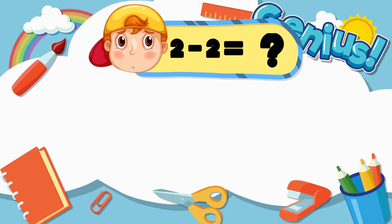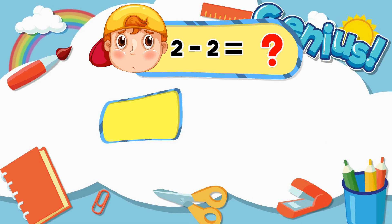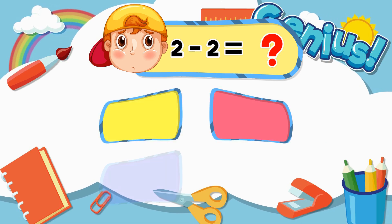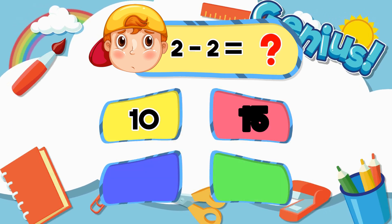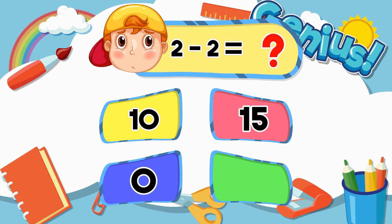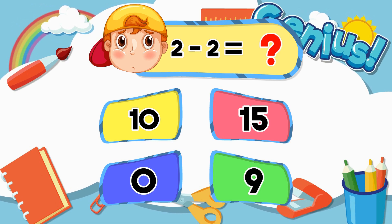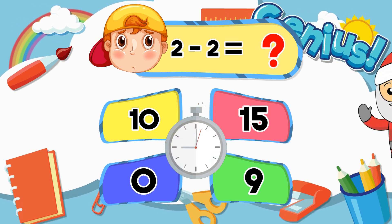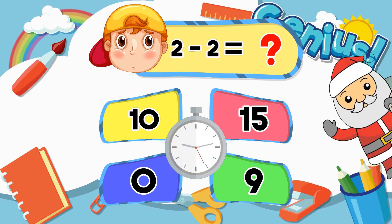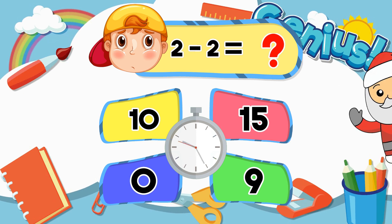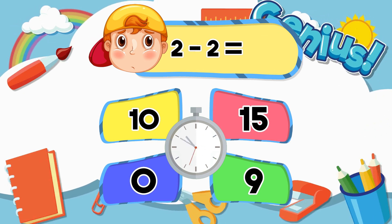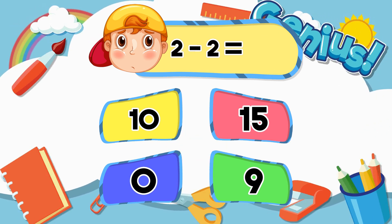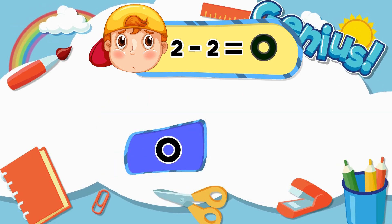What is 2 minus 2? Options: 10, 15, 0, 9. Answer: 0.